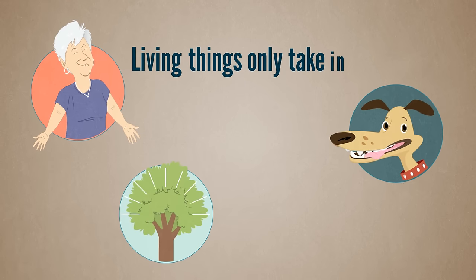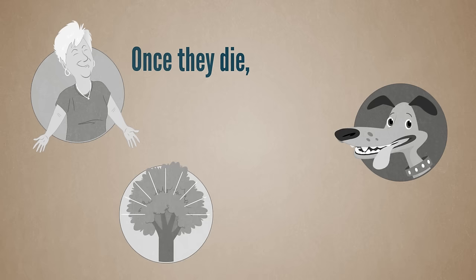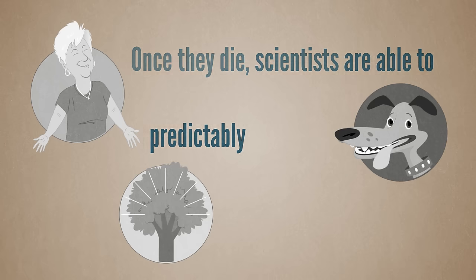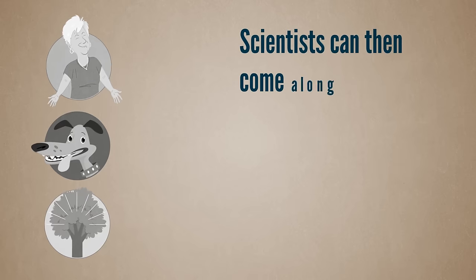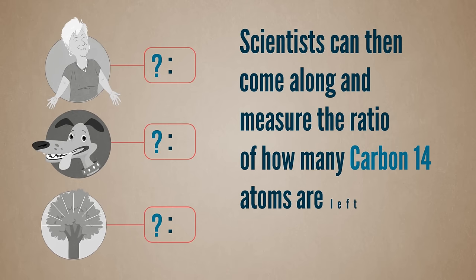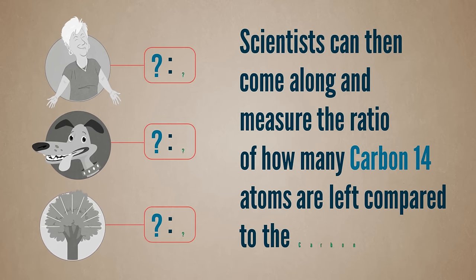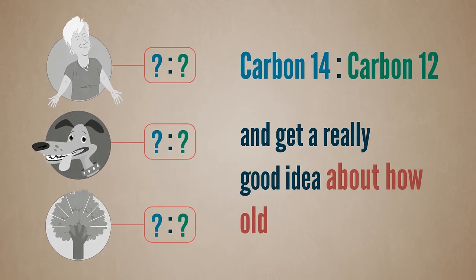Living things only take in carbon 14 while they are alive. Once they die, scientists are able to predictably measure the carbon 14 decay. Scientists can then come along, measure the ratio of how many carbon 14 atoms are left compared to the carbon 12 atoms, and get a really good idea about how old something is.